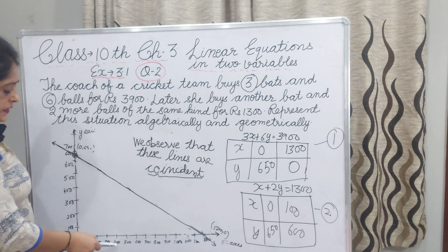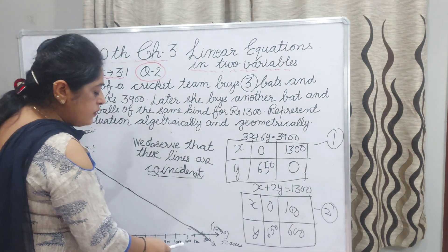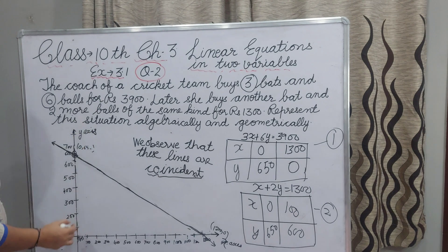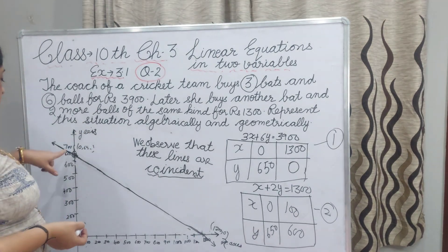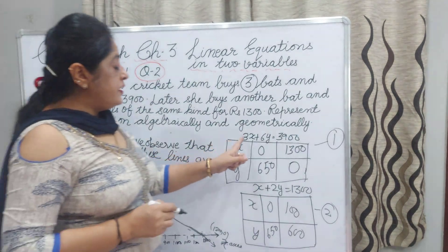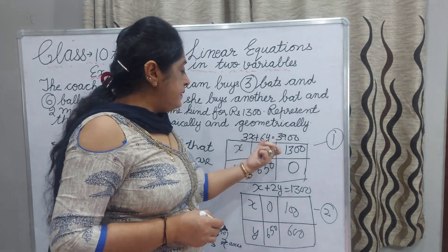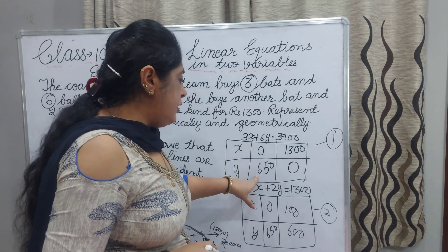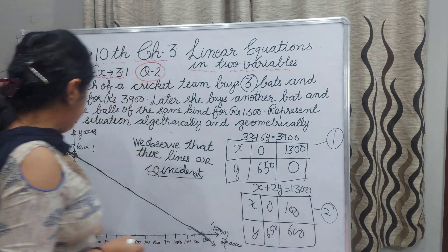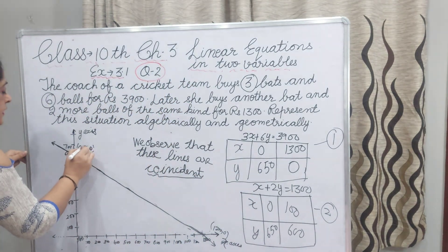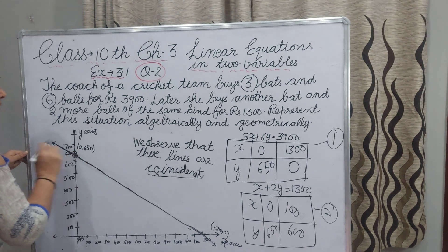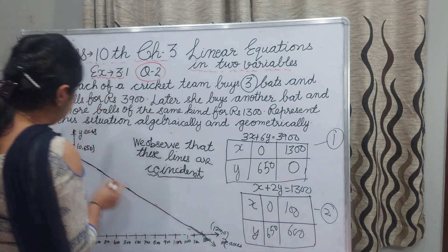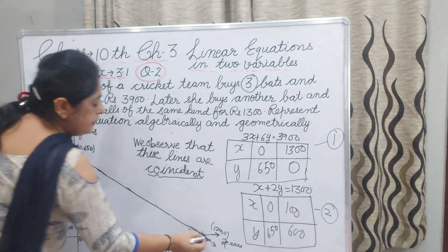For the first equation, 3X plus 6Y equals 3,900: we put the values. X is 0 and Y is 650 — this point we mark here. Then X is 1,300 and Y is 0 — we mark this point. We connect these two points and draw one line for the first equation.